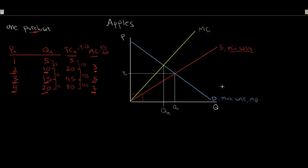They're going to get this good as cheap as they possibly can — down to that minimum willingness to accept on the supply curve. So they'd be paying PM — Price Monopsonist. By being the sole purchaser, they hold back the quantity they buy and push the price down. This is the core of monopsony market power.